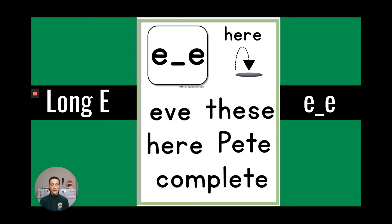The next one is E consonant E. We remember that that little line here means consonant E. So we have here, Eve, these, here, Pete, and complete.